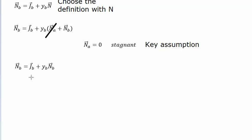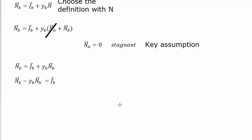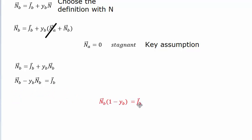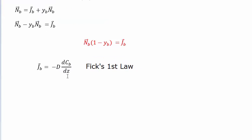We cross off the N_sub_A term in the advective flux, so the total flux equals the diffusive flux plus the advective flux, where the advective flux is simply the mole fraction of B times its total flux. We then group terms to get the total flux as a function of everything else. This line is important — marked in red — because we'll come back to it later.